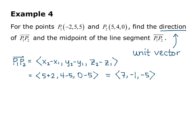Now I need a unit vector, so I'm going to find the length or magnitude of that vector now. So the magnitude of vector P1 P2 is equal to the square root of 7 squared plus negative 1 squared plus negative 5 squared. And that simplifies to square root of 75.